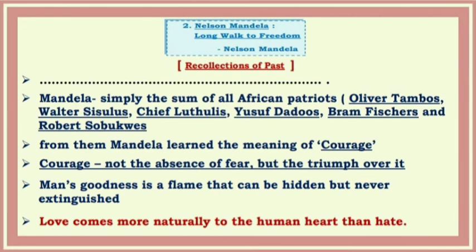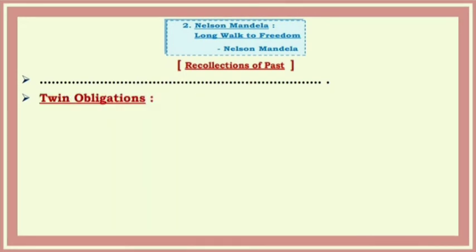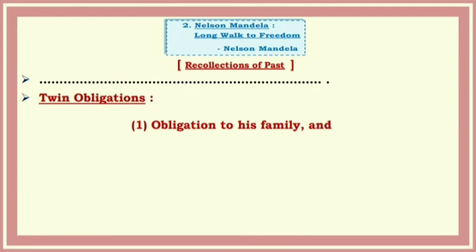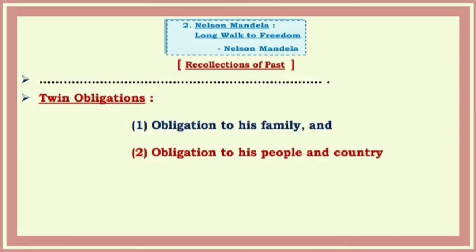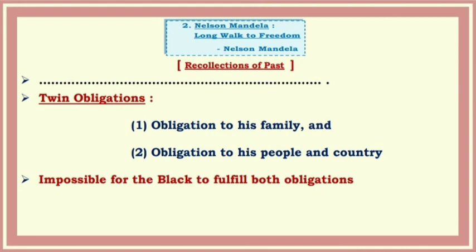According to Mandela, every person has twin obligations — two responsibilities. First, his obligation to his family; and second, the obligation to his people and country. But it was impossible for the black people to fulfill both obligations. In those days, the black people of South Africa could fulfill neither their responsibility to their family nor their responsibility to their country.